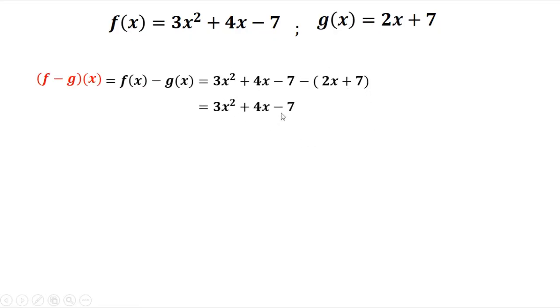So we have 3x squared plus 4x minus 7, then negative 2x and negative 7. Then you combine like terms, so we have 3x squared plus 2x minus 14. So this is the answer.